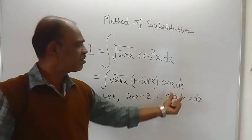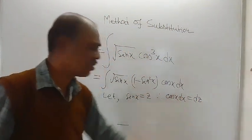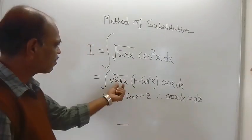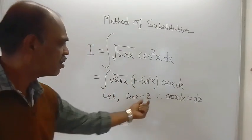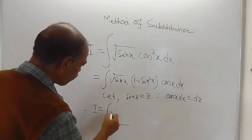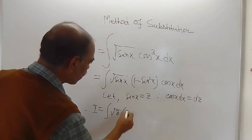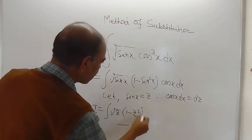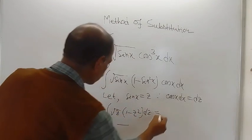So this cos x dx can be replaced by dz, and this sin x can be replaced by z. Therefore, the given integration becomes integration of root over of z into 1 minus z square into dz.